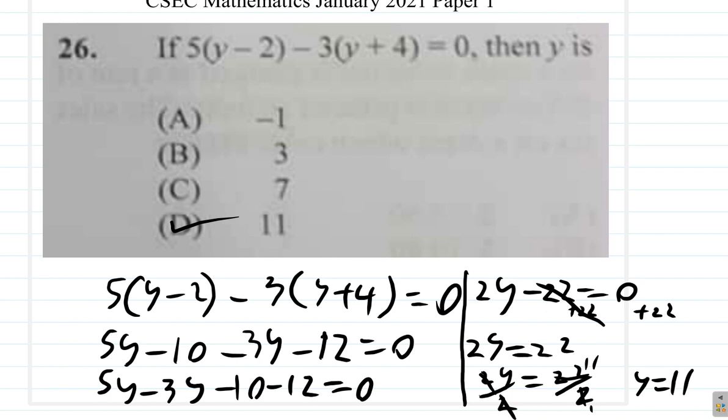And, you could have seen what the answer is from up here now. 2 times what gives you 22? You know that 22 minus 22 is 0. So, 2 times something gives you 22. It would be 11. Alright. So, in this case, for question 26, the answer is D, 11.